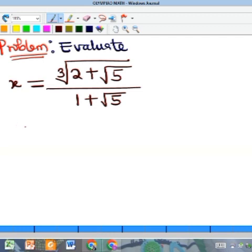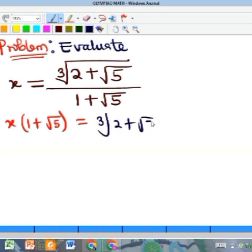If we do that we are going to have x multiply the denominator to give me x times (1 plus root 5) to be equal to, on the other side, the cube root of 2 plus the root of 5. So what do I do next?